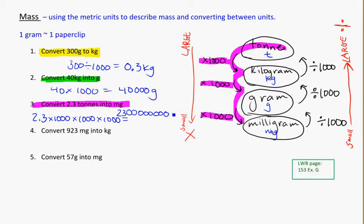The answer is 2.3 billion milligrams in 2.3 tons. Your calculator may also have told you 2.3 times 10 to the ninth — that means the exact same thing: there are 9 places after that digit. You stretch that number out with 9 more spots behind it.